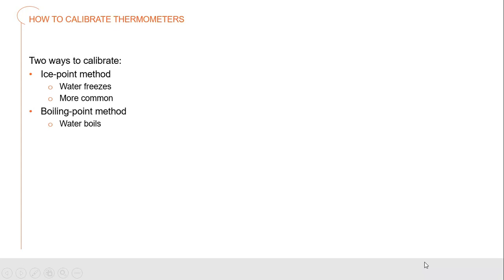Bimetallic thermometers are reasonably accurate to within a couple of degrees and easy to recalibrate using the ice point method — placing the bimetallic strip into freezing water. Be careful not to add salt, which can alter the freezing point and give an inaccurate reading. You can also place the thermometer into boiling water to recalibrate, though this is more dangerous since you're holding the thermometer over boiling water — ice water won't hurt anybody.